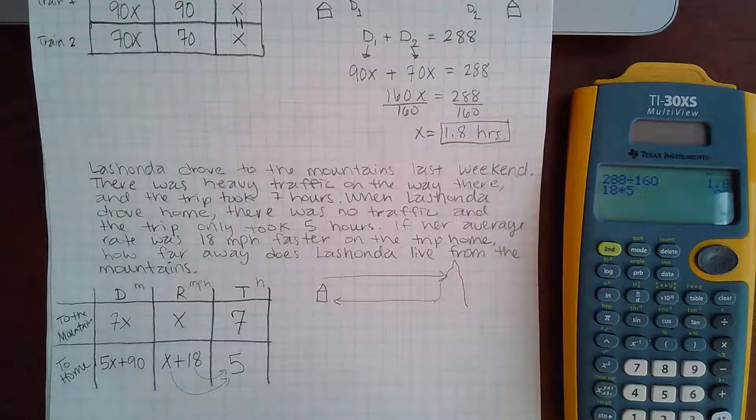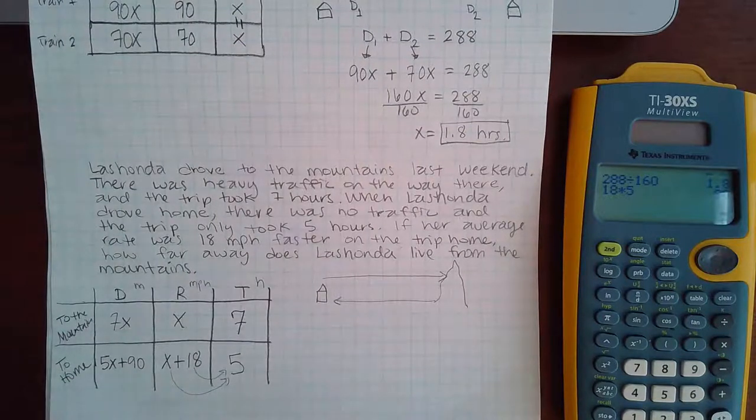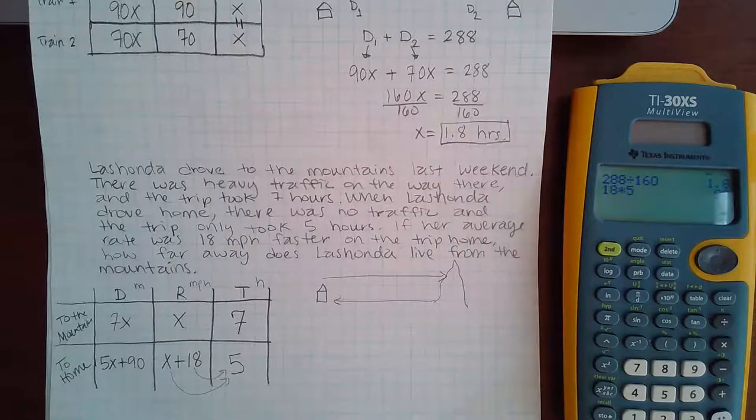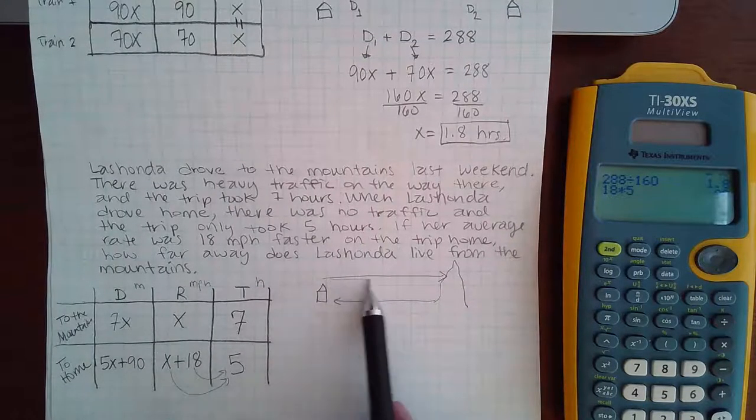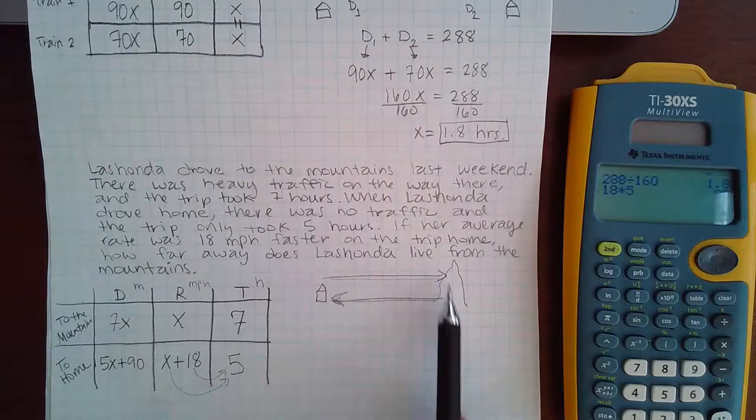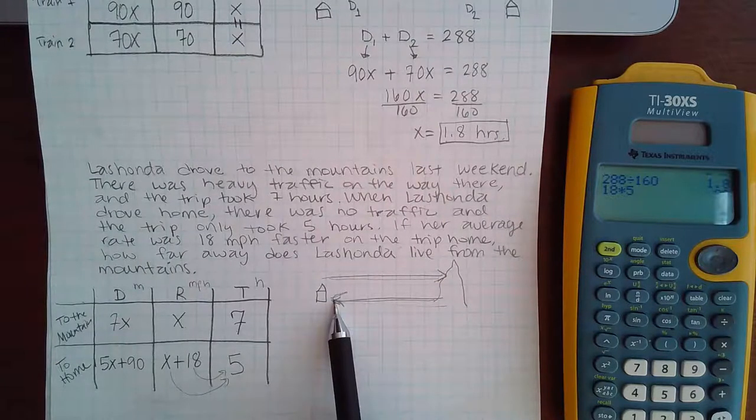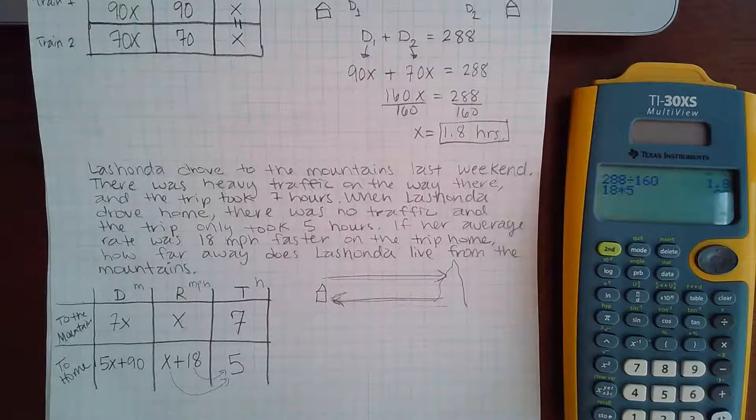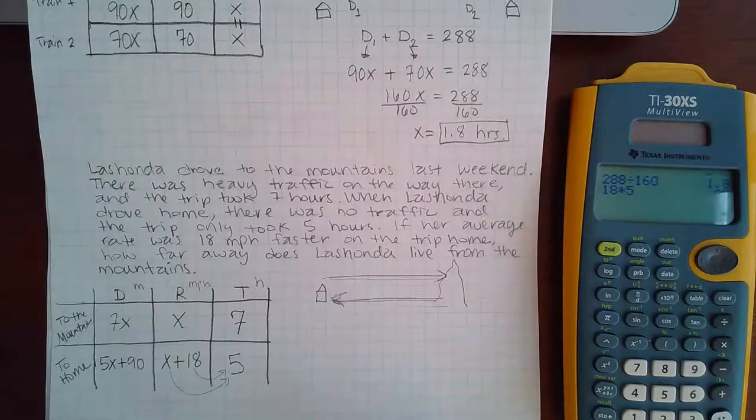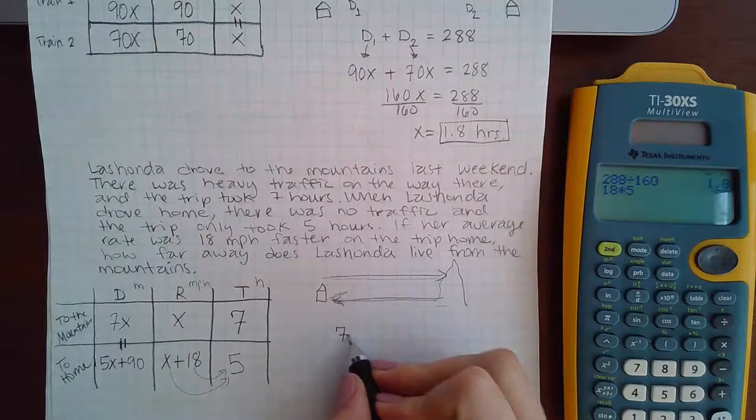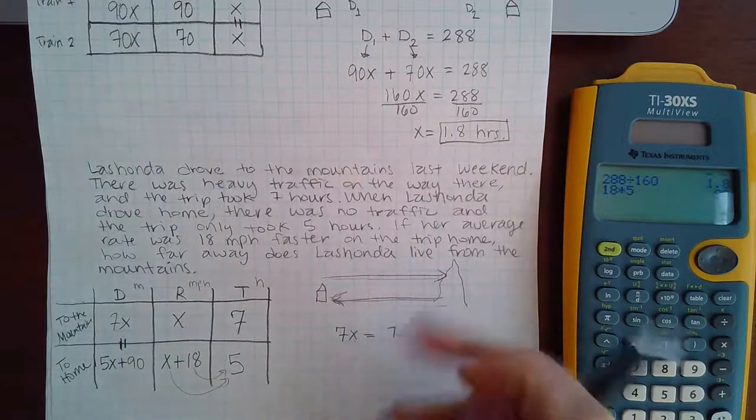So then, how do I write an equation? What else do I know? They did tell me something there that helps me, but they didn't say it explicitly. It's just kind of implied considering the scenario. Notice that I said, this is the way to the mountain, this is the way back. Notice that it doesn't matter what direction she's traveling in, the distance would still be the same. The house is not going to move, and the mountain is not going to move. So they're exactly the same distance. So that means this distance should equal this distance. So my equation becomes 7X equals 5X plus 90.